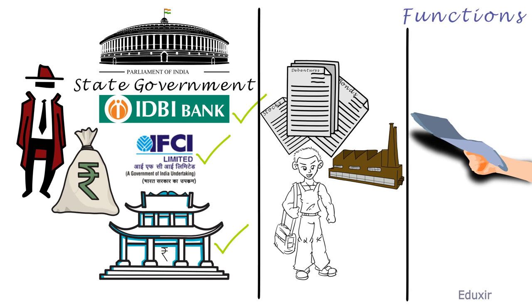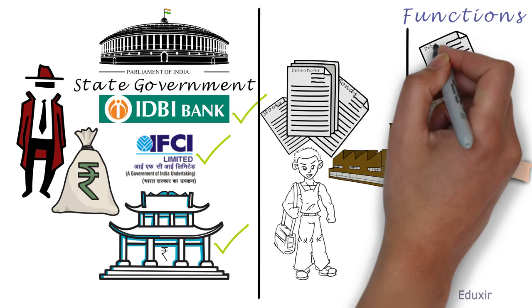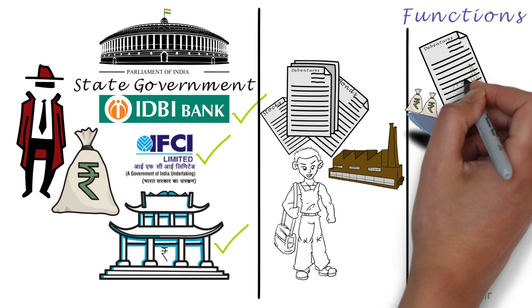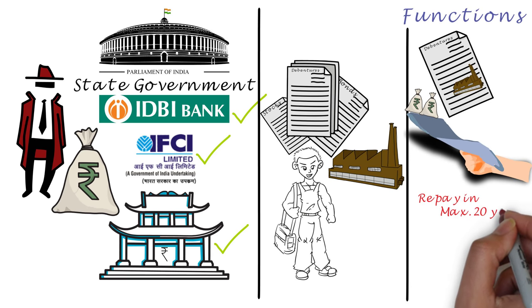Coordinate the grant of advances and loans or subscribe to the debentures of industrial concerns. The maximum repayment period is 20 years. There is provision to convert into shares or stocks of the company.